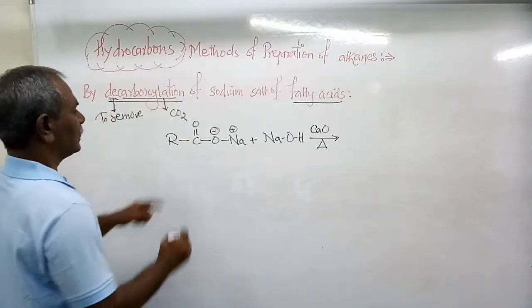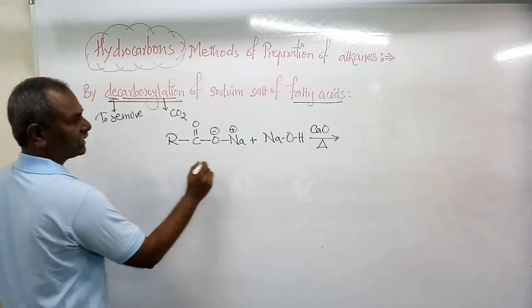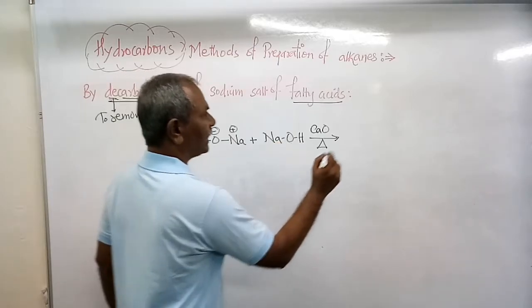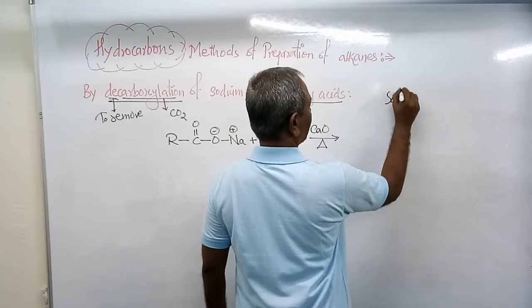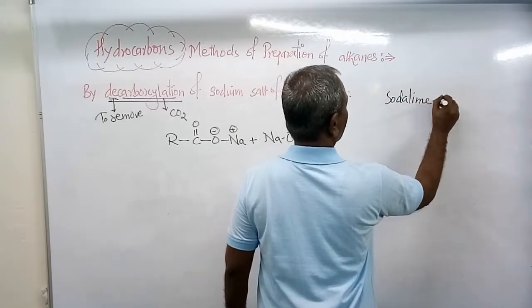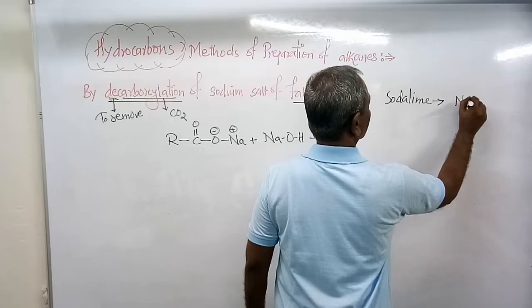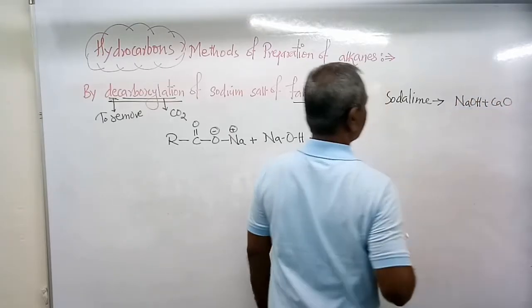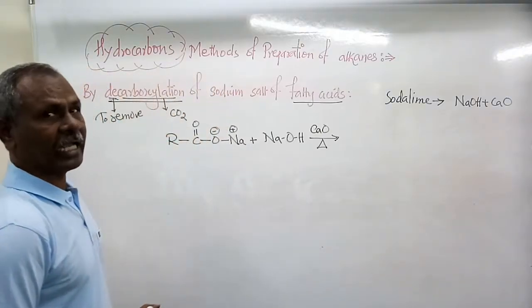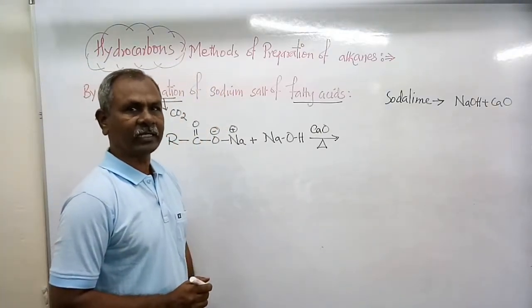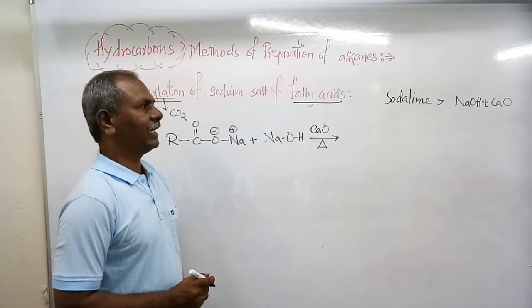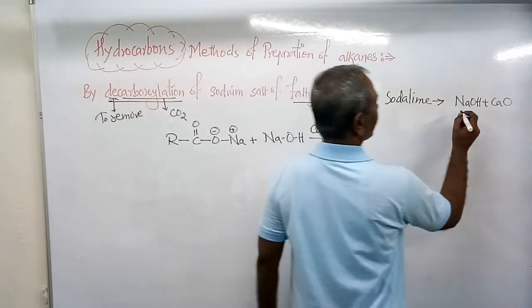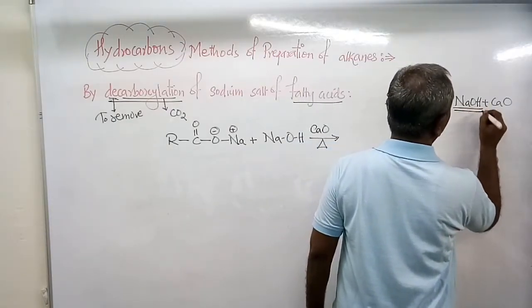When sodium salt of carboxylic acid is treated or heated with soda lime - soda lime is a mixture of sodium hydroxide and calcium oxide. Calcium oxide helps to increase the rate of reaction because it is porous in nature and keeps sodium hydroxide in dried form.